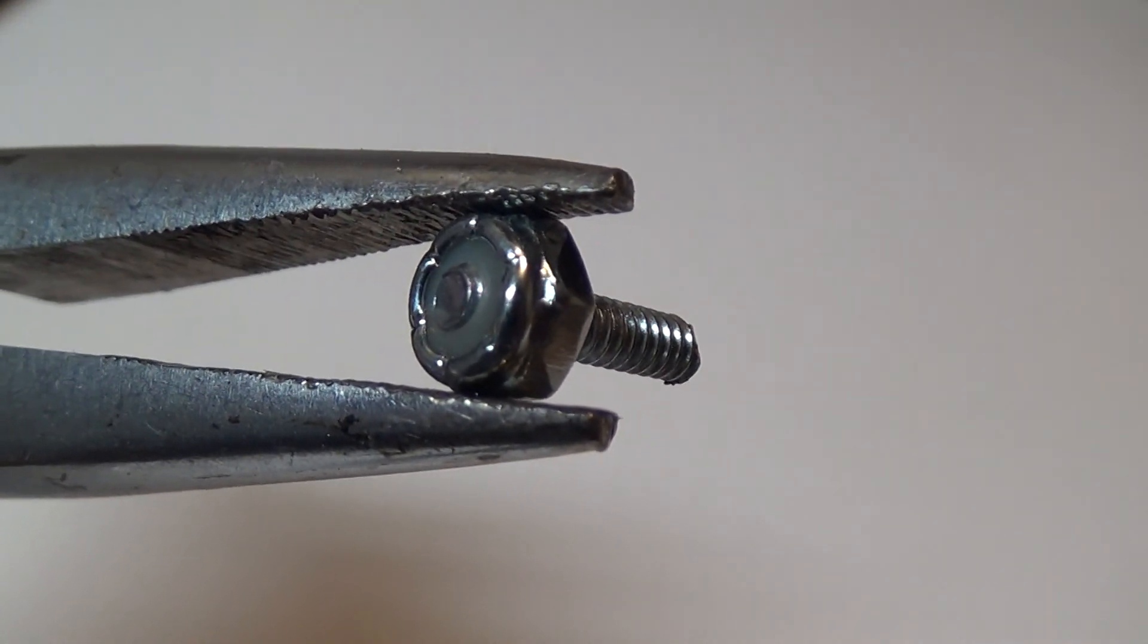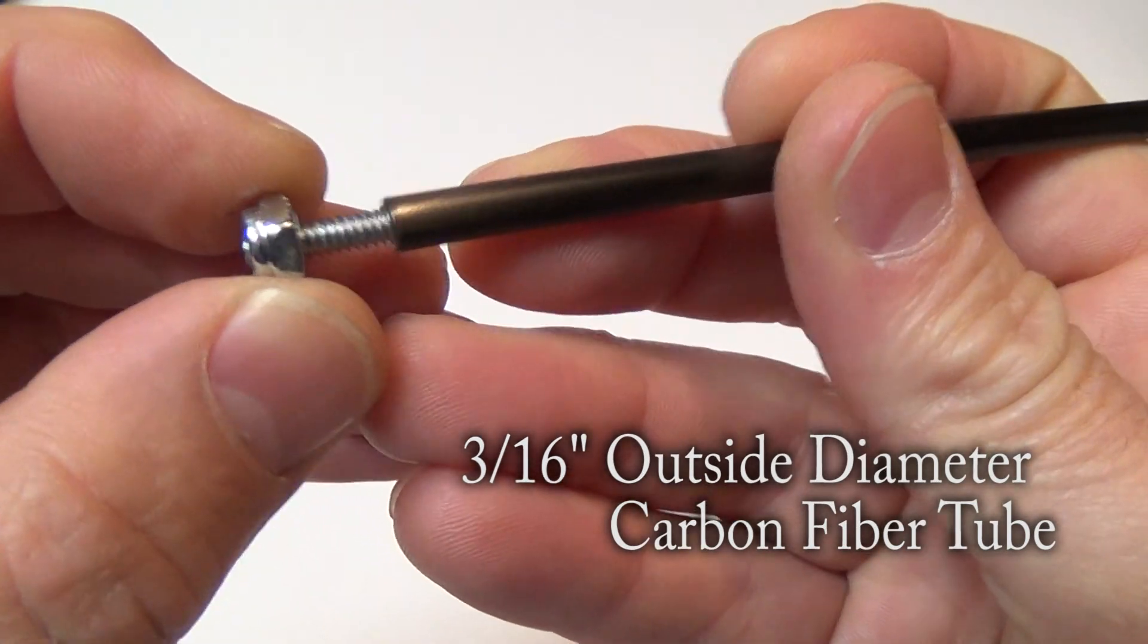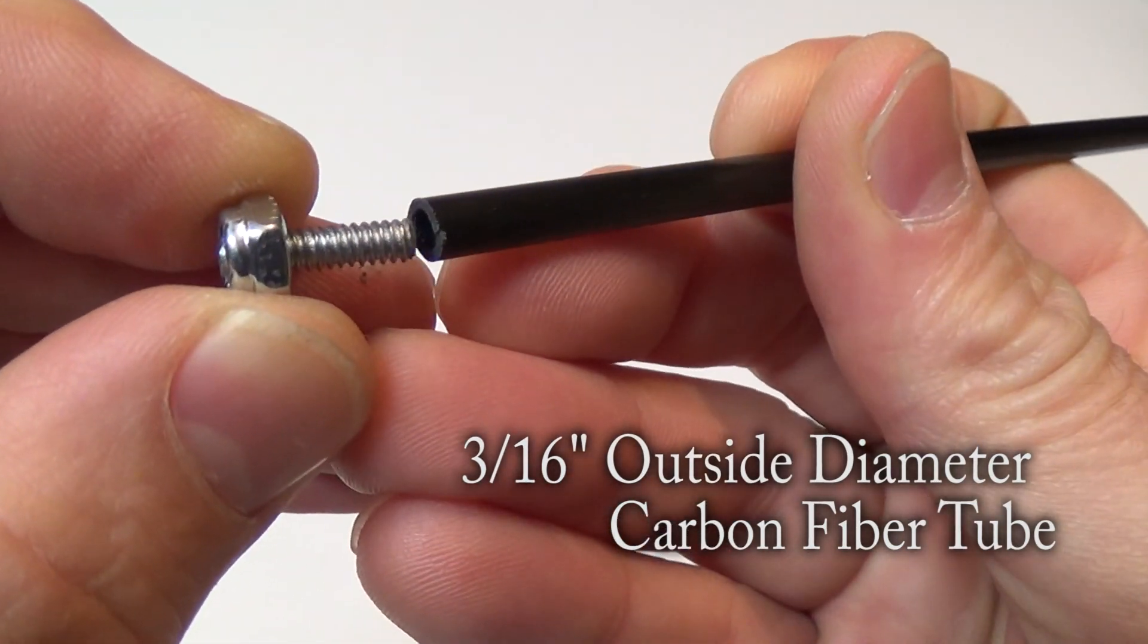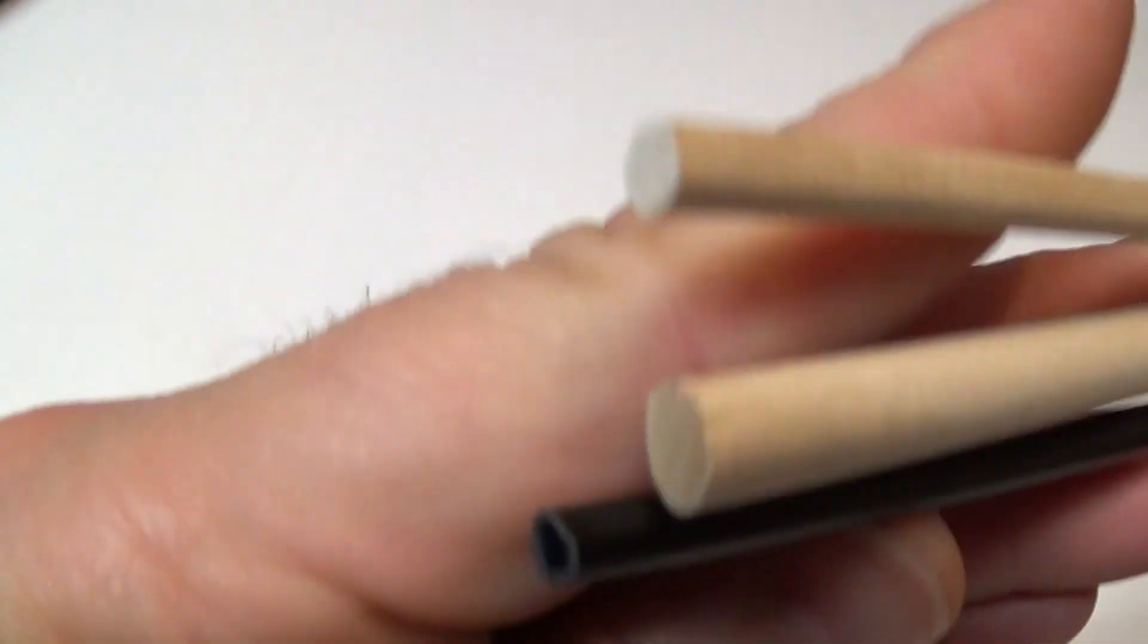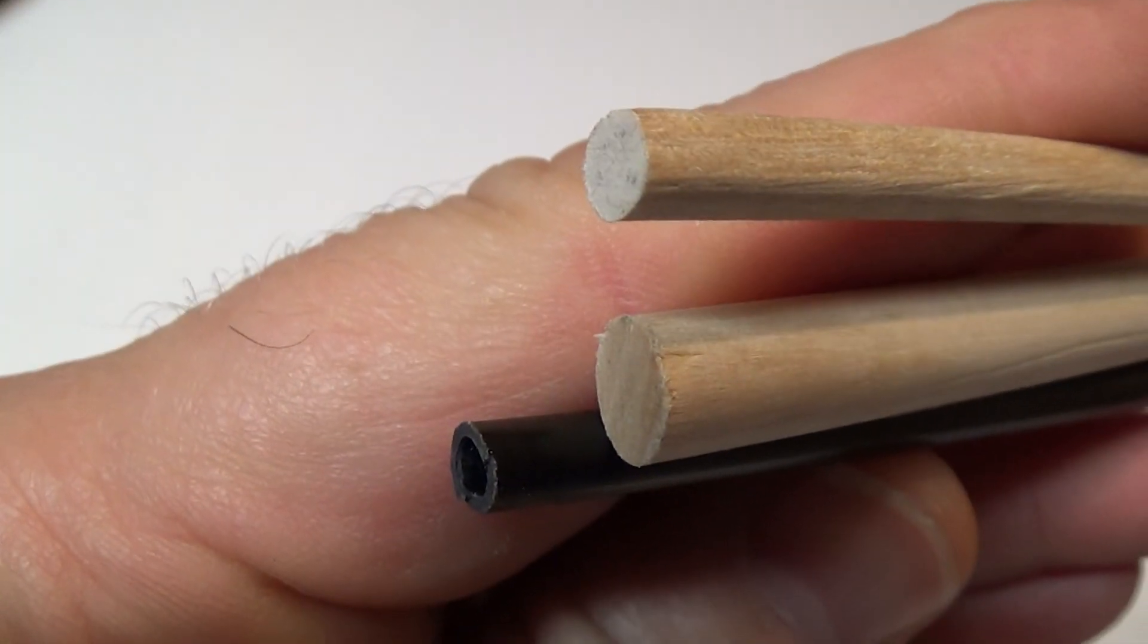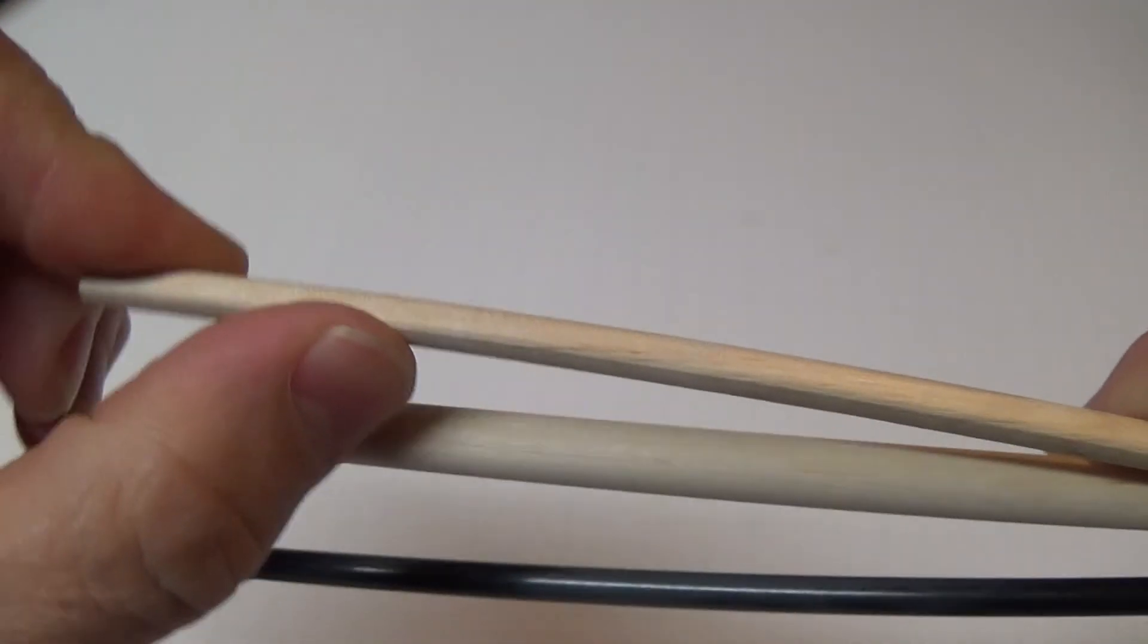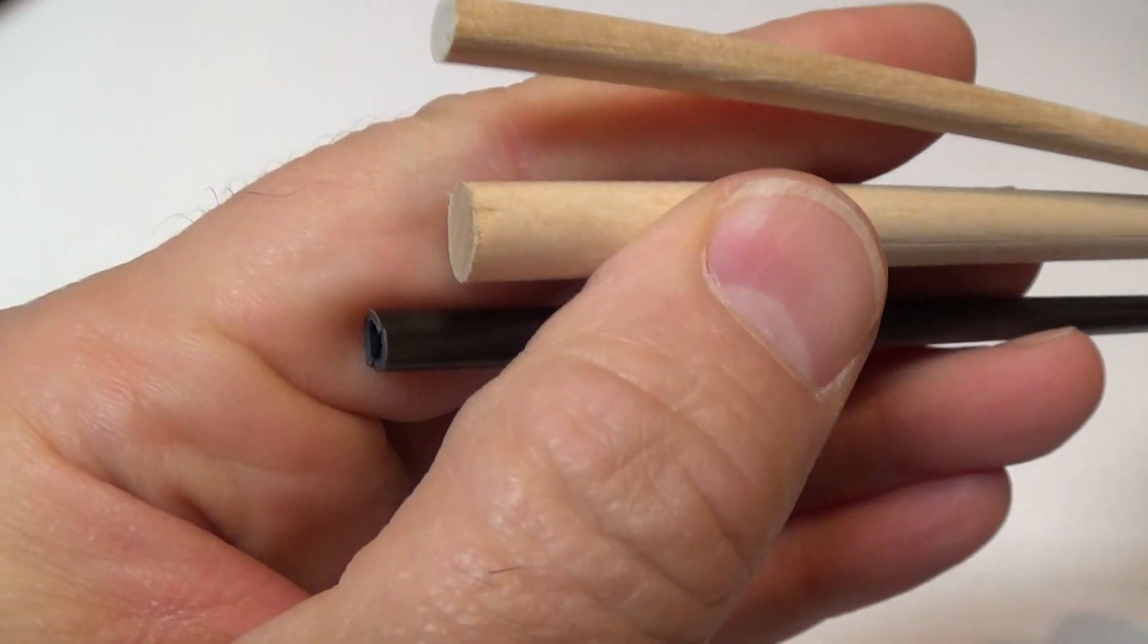The reason I use three-sixteenths inch outside diameter CF tube is because it has a one-eighths inch inside diameter which is about the same size as the number six bolts I picked up from Home Depot. Now if you don't want to use carbon fiber you can use just about anything really such as a wooden dowel. However carbon fiber is stiffer and stronger than wood and a dowel would require an extra step of drilling a hole in the end of it for the next step.